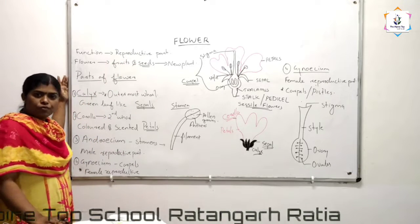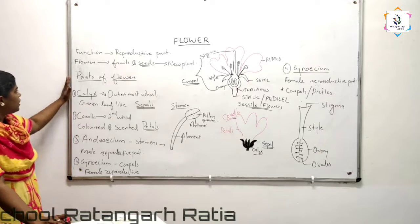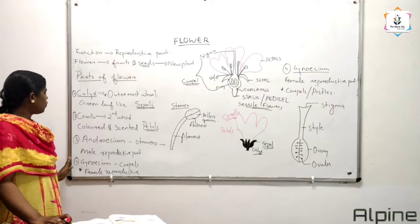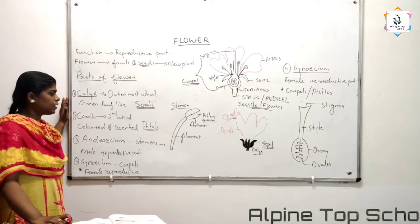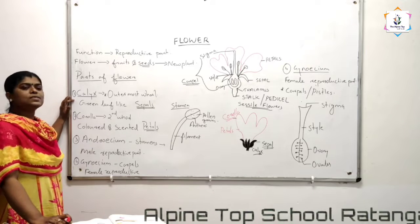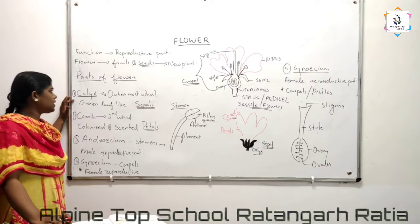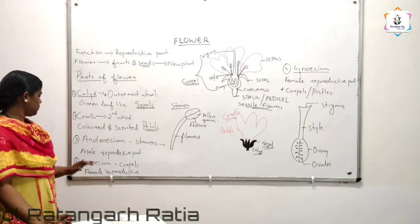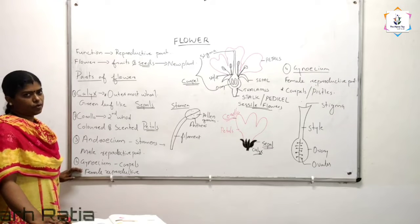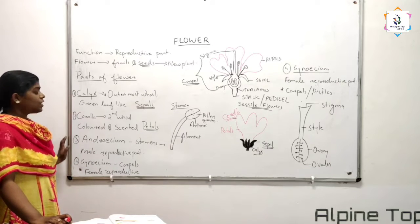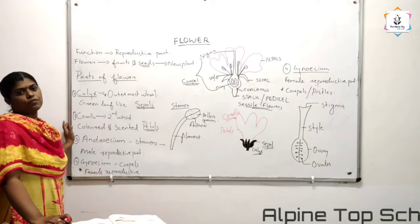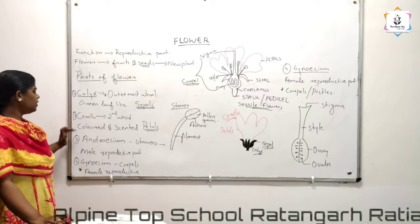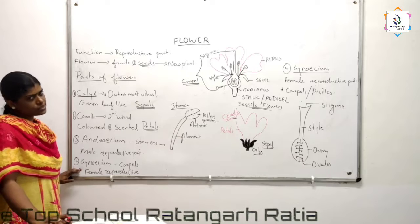What are the parts of a flower? In a basic flower it has about four parts. The first part is calyx, the second one is corolla, the third is androecium, and the fourth is gynoecium. These are the four major parts of the flower.